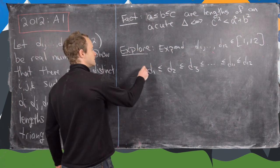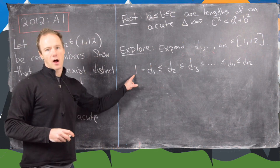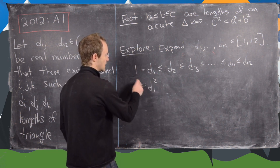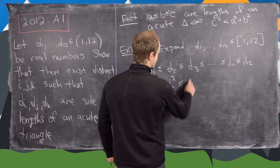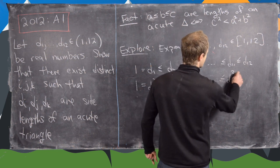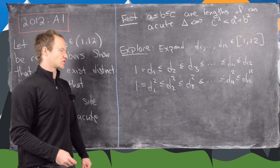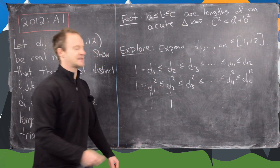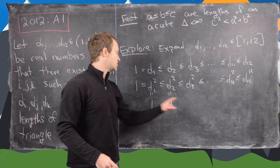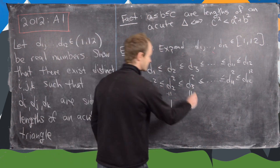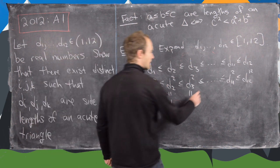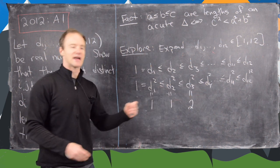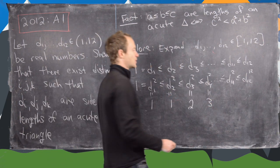Let's say d1 equals 1, placing it right on the edge of our expanded interval. After squaring, d1 squared equals 1 ≤ d2 squared ≤ d3 squared ≤ ... ≤ d12 squared. If we want there to be no acute triangles, but just on the edge, we can set d1 squared equals 1 and d2 squared equals 1. Then d3 squared should exactly equal the sum of those two, giving d3 squared equals 2. Then d4 squared equals 3, and so on.